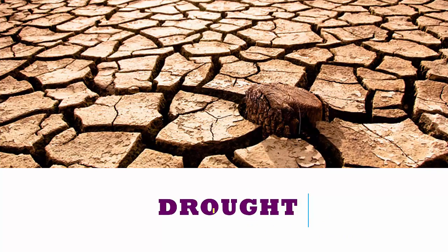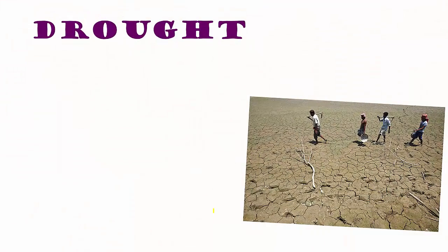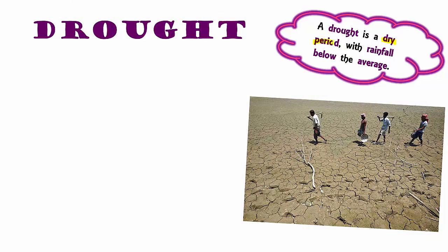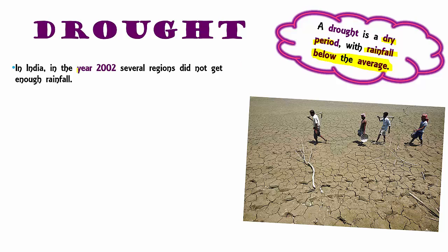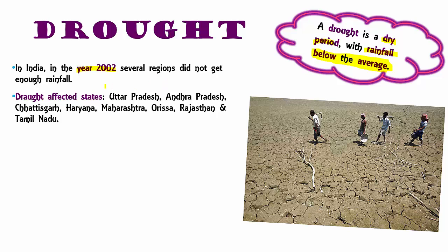Now we will move on to drought. Drought is a dry period where the rainfall is below average. In India, in the year 2002, several regions did not get enough rainfall and were declared drought affected. The drought-affected states of India were Uttar Pradesh, Andhra Pradesh, Chhattisgarh, Haryana, Maharashtra, Orissa, Rajasthan, and Tamil Nadu.